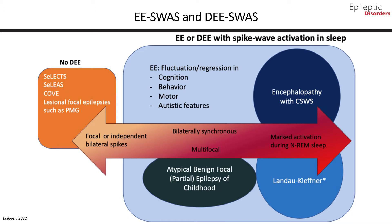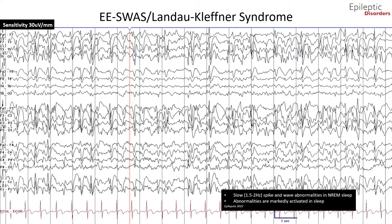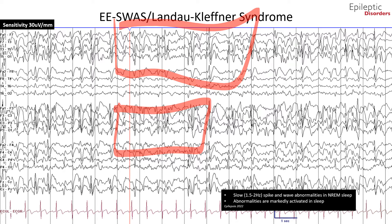Epileptic encephalopathy with spike wave activation in sleep is now recognized in patients with pre-existing normal development, with an activation of slow 1.5 to 2.5 Hz spike and wave complexes in non-REM. Whereas developmental epileptic encephalopathy with spike wave activation in sleep occurs in patients with pre-existing neurodevelopmental disorders and is defined on the basis of documented persisting worsening of cognitive, language, behavioral, and motor functions, concomitant with significant activation of spike wave complexes during sleep. This bipolar montage EEG was taken during sleep and shows continuous high-amplitude spike wave discharges in sleep.